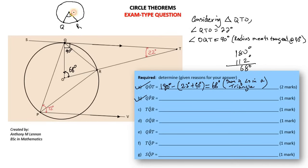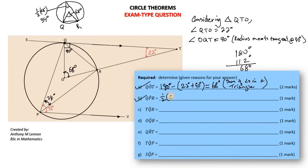The angle at the center is 68 degrees. If we have another angle formed from those same two points Q and R but at the circumference, this angle is half of the angle at the center — half of 68 degrees, which is 34 degrees. The angle at the center is twice the angle at the circumference, standing on arc QR or chord QR. So angle QPR equals half of angle QOR, which is half of 68 degrees, which is 34 degrees. Reason: angle at the center is twice the angle at the circumference.